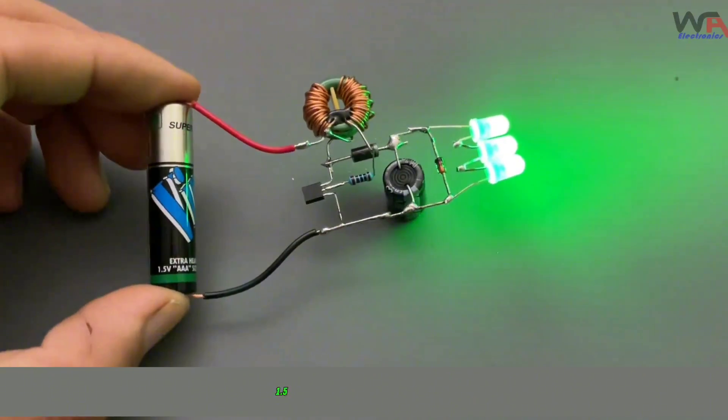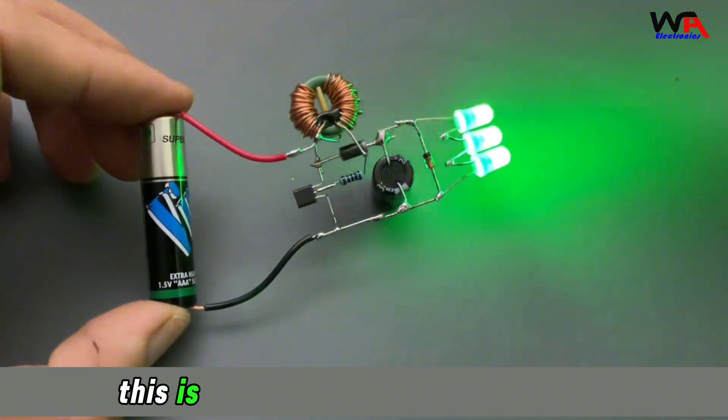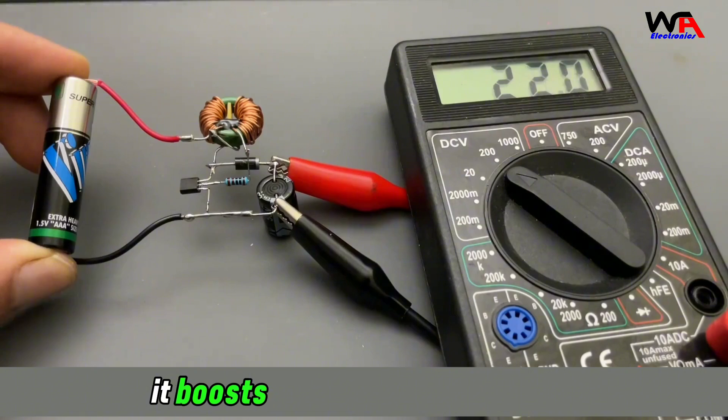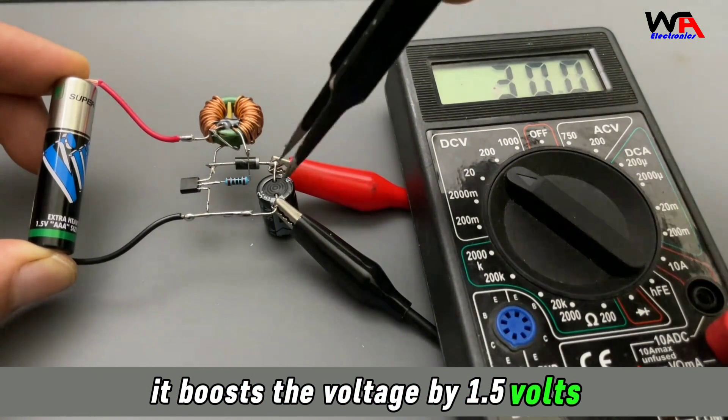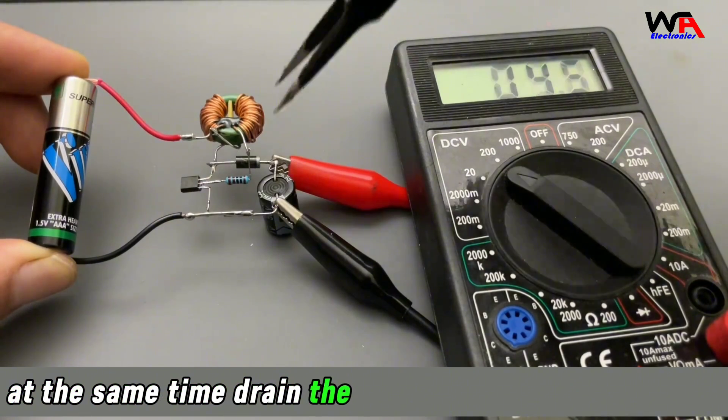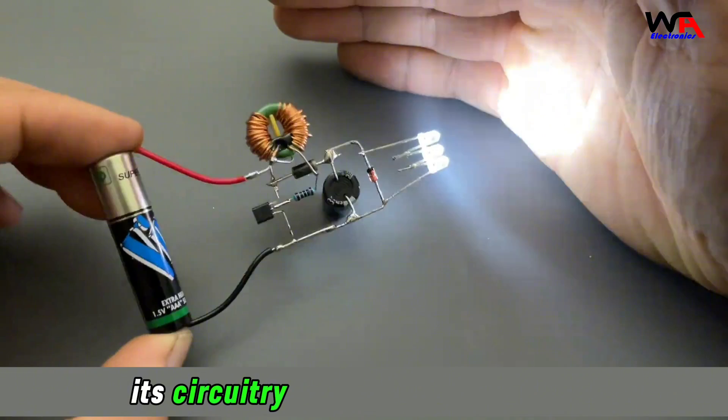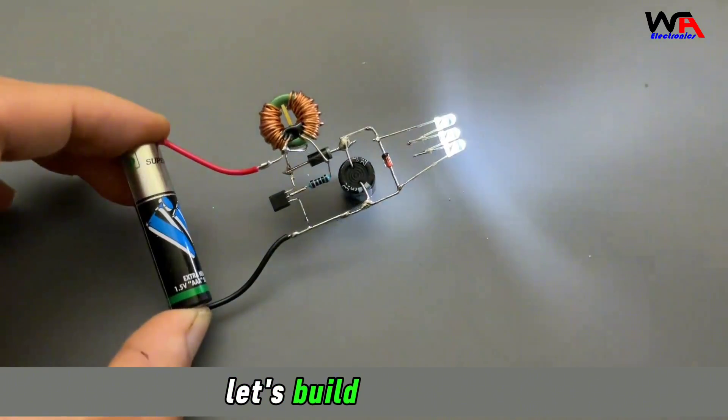DIY Joule Thief Circuit 1.5 volt booster. This is the very famous Joule Thief Circuit. It boosts voltage by 1.5 volts and at the same time drains the energy of waste batteries. Its circuitry is very simple and easy. Let's build the circuit.